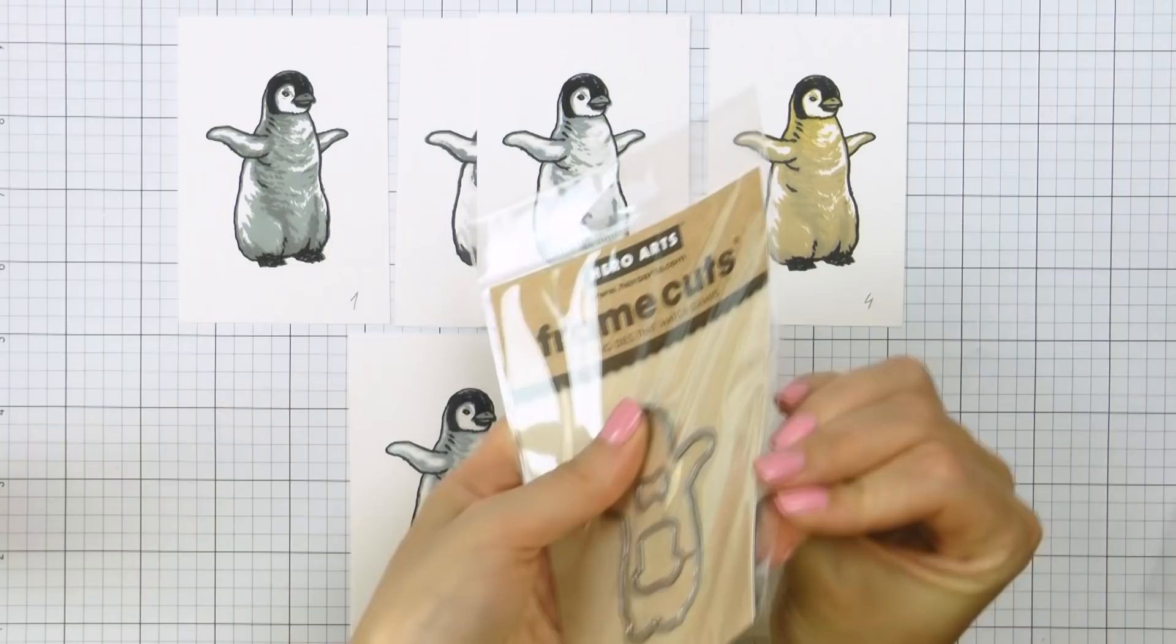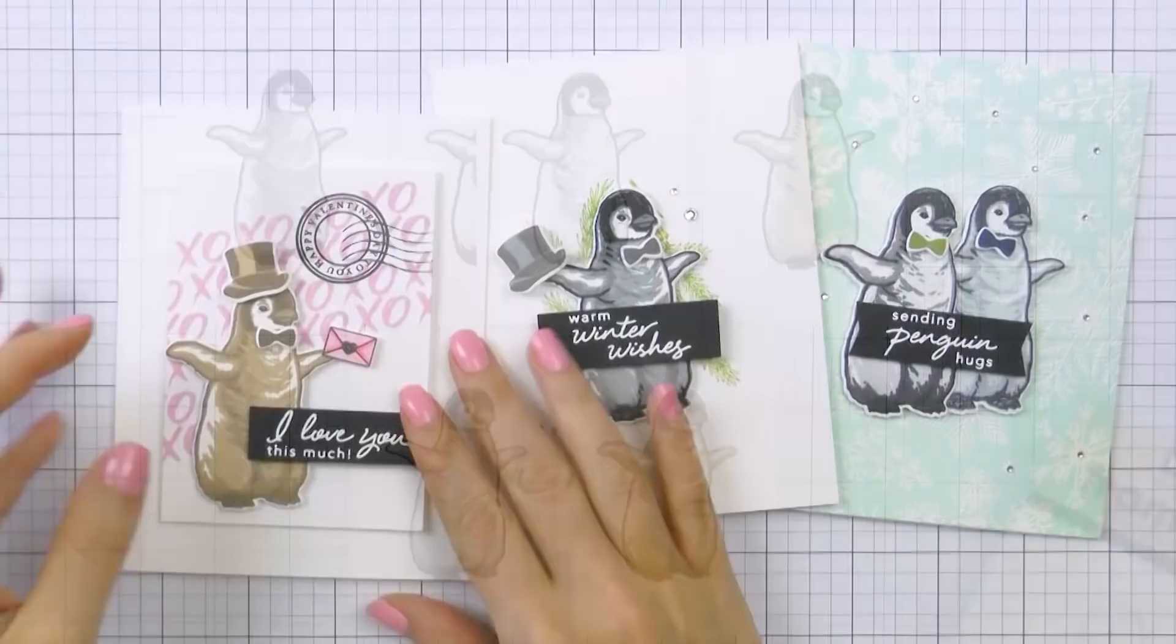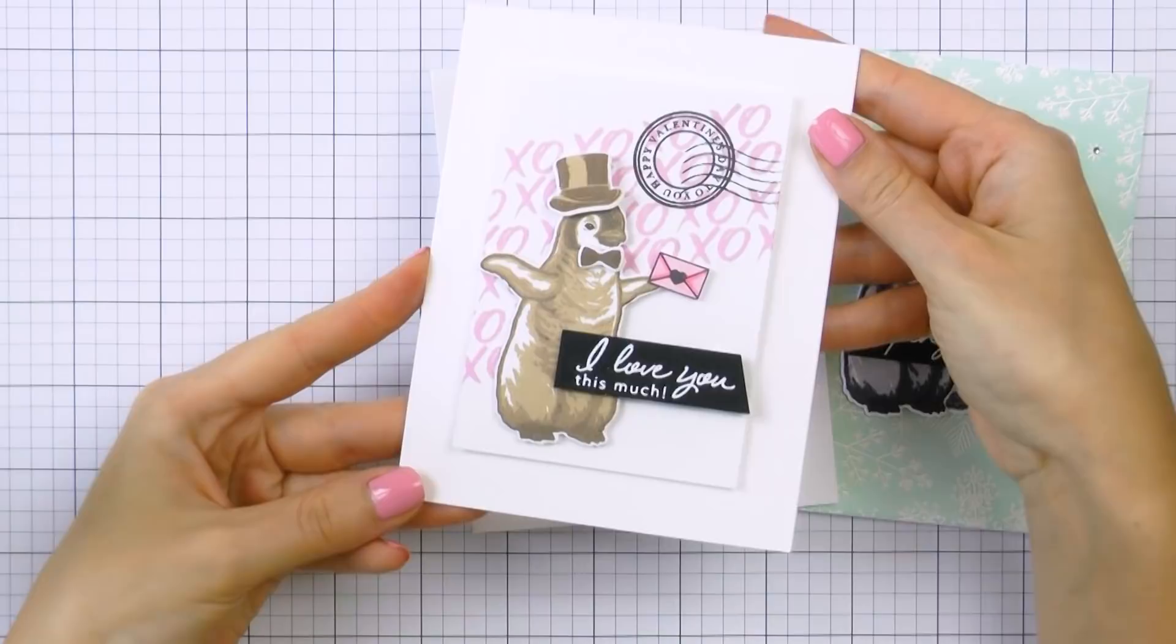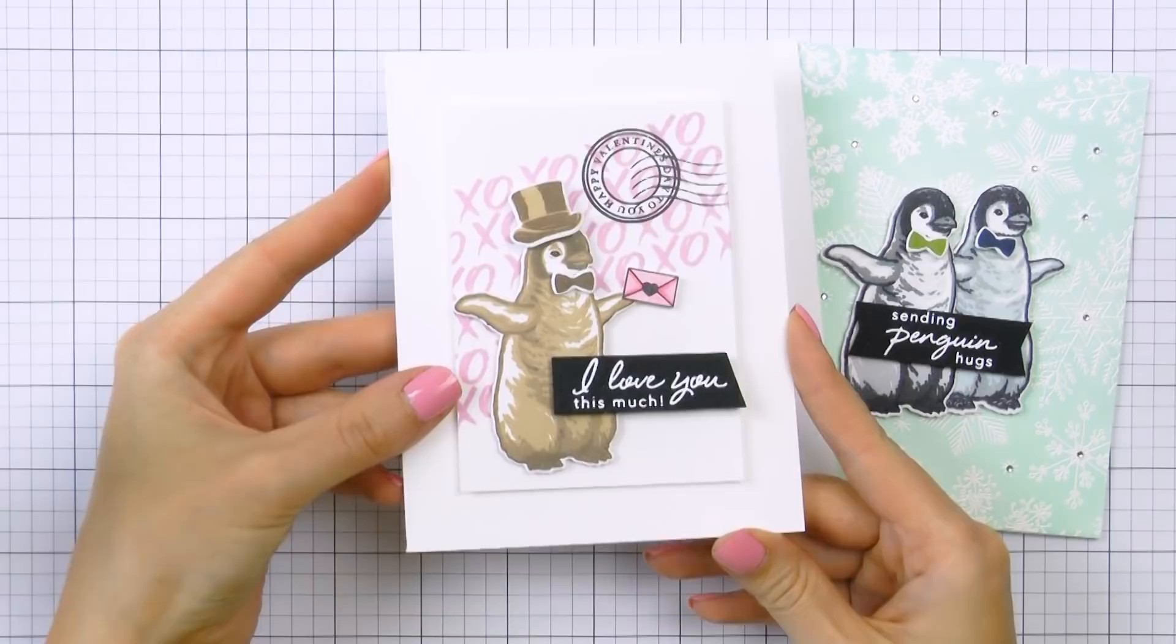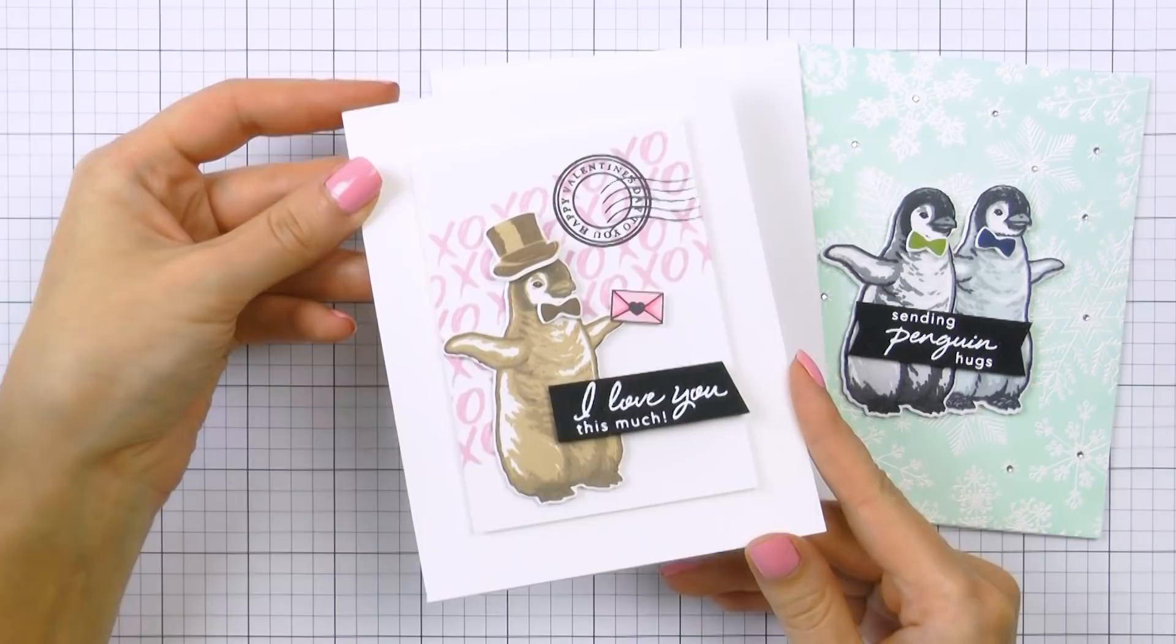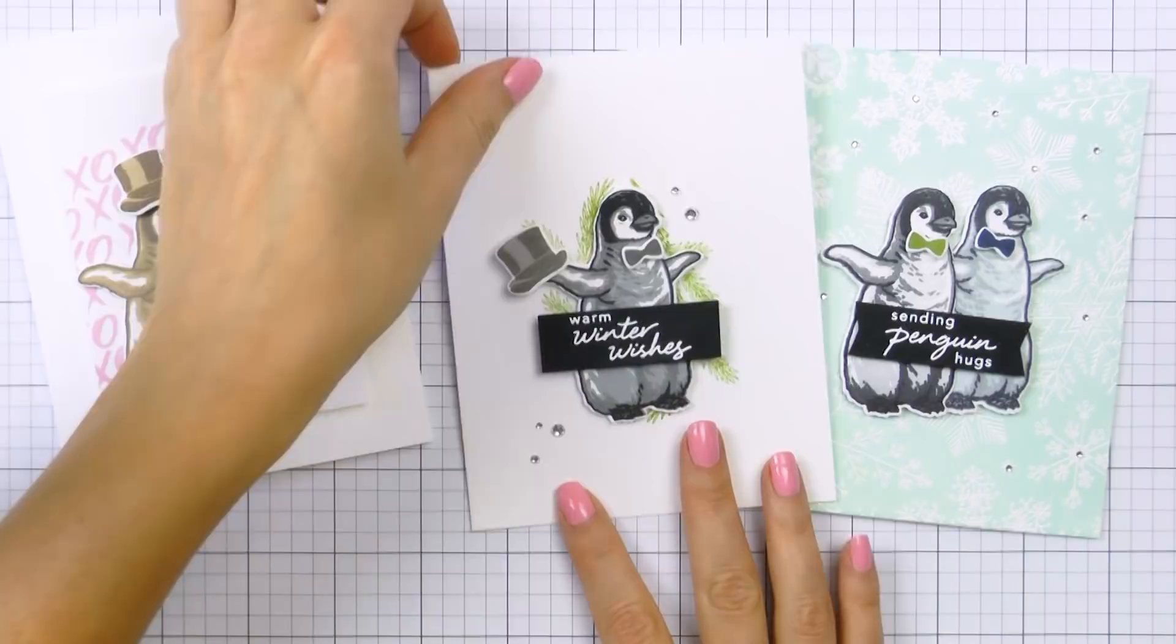I made 3 cards using these images and I'll quickly walk you through them. I used a brown penguin to make a Valentine's Day card. This penguin is saying I love you this much and he's holding a love letter for his sweetheart. There is a partial diagonal stamped XOXO in the background as well as a circle imitating a postage stamp. My penguin is all dressed up in a hat and a bow tie and these accessories as well as the white heat embossed sentiments come from the baby penguin stamp set.